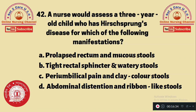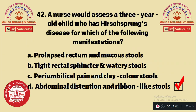Question 42: A nurse would assess a three-year-old child with Hirschsprung's disease for which of the following manifestations? A. Prolapse rectum and mucus stool, B. Tight rectal sphincter and watery stool, C. Periumbilical pain and clay-colored stool, D. Abdominal distension and ribbon-like stool. The right answer is option D — abdominal distension and ribbon-like stool are commonly present in a child with Hirschsprung's disease.